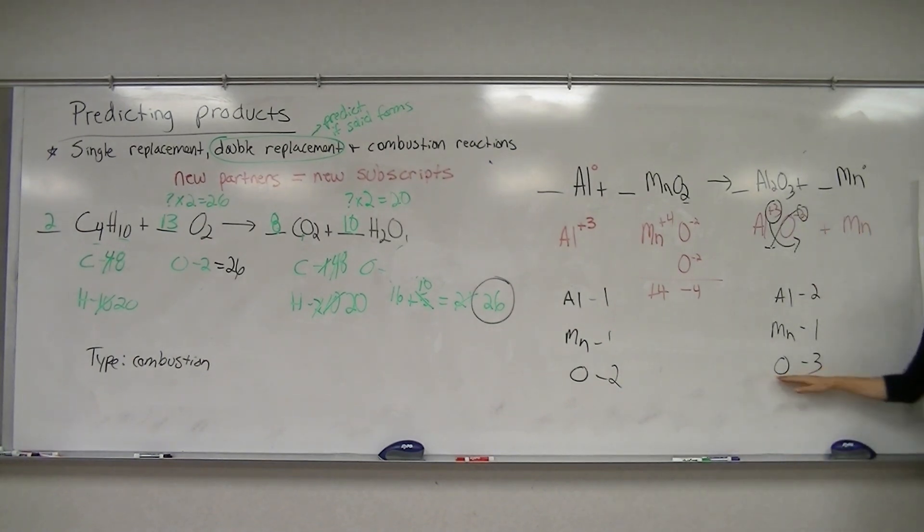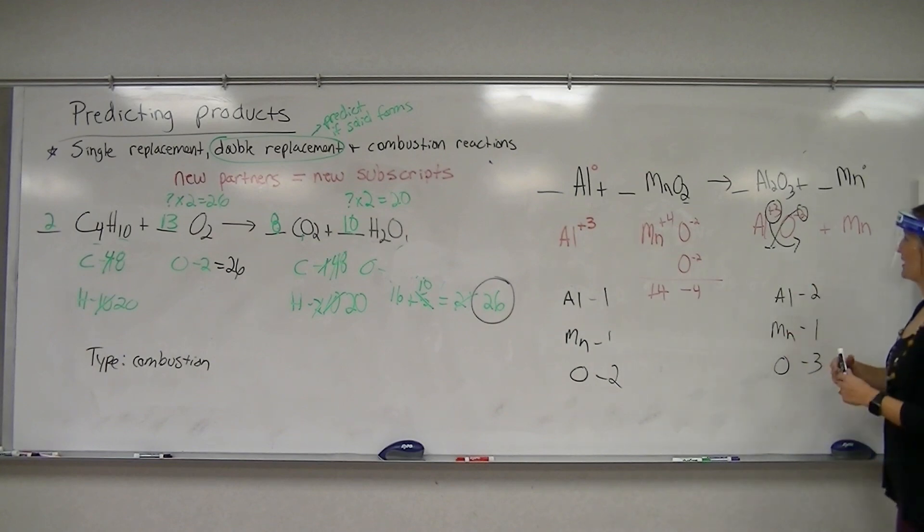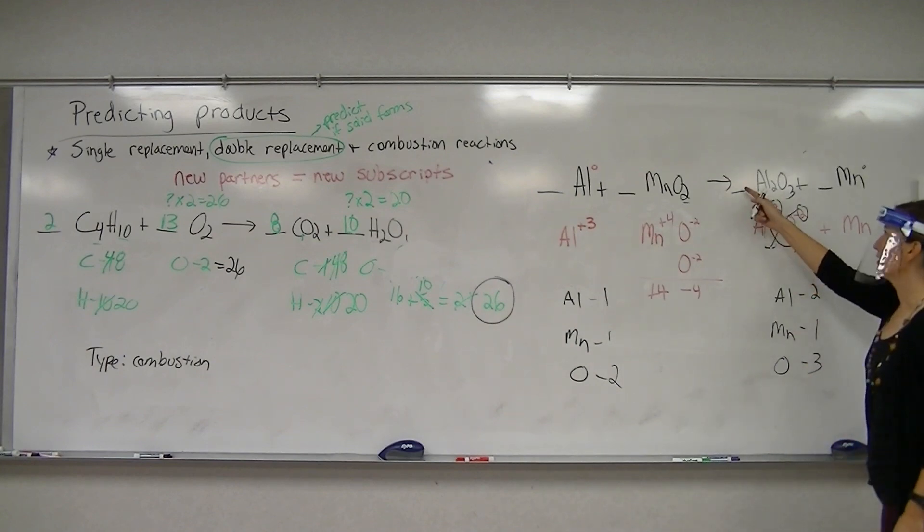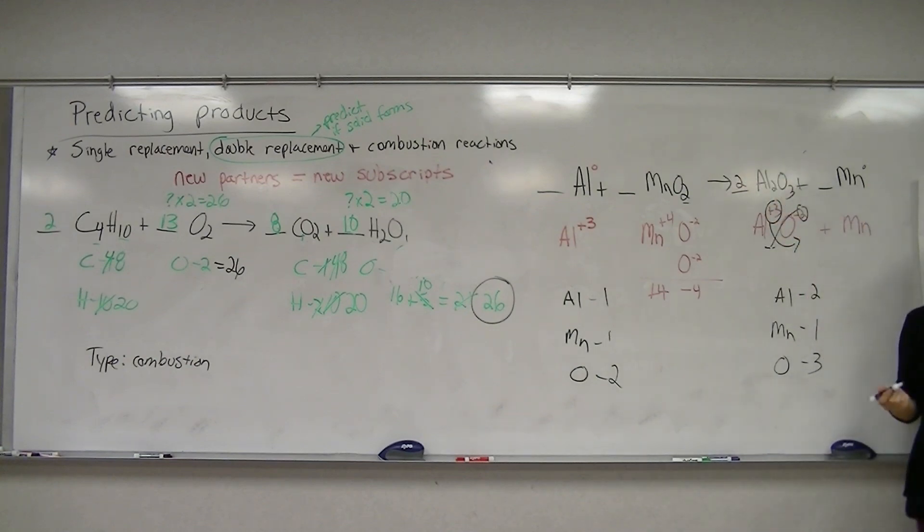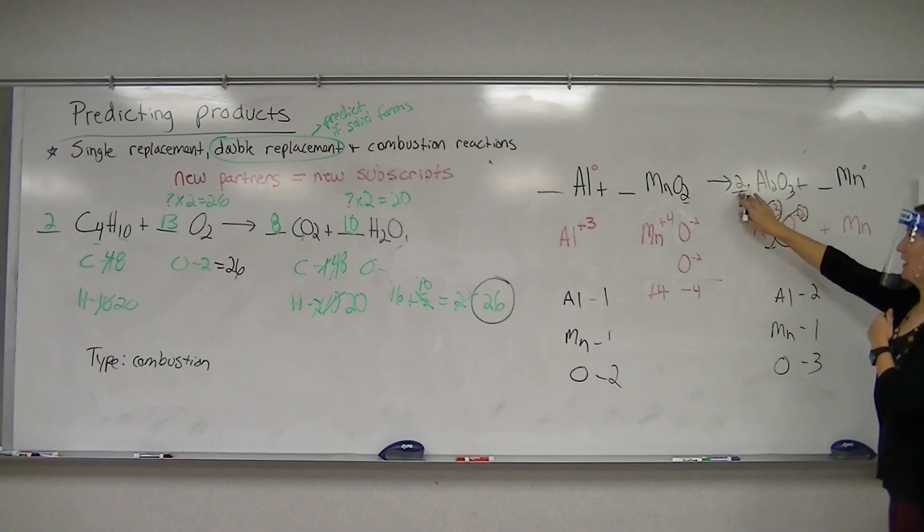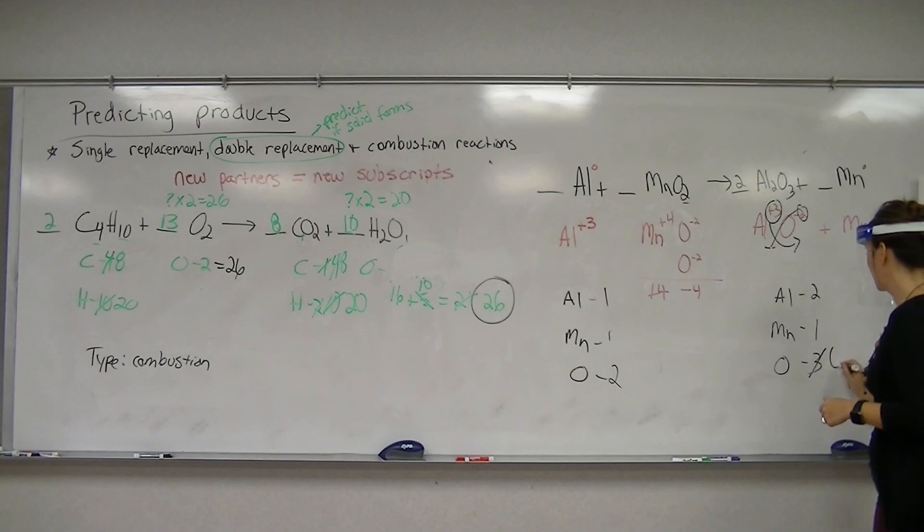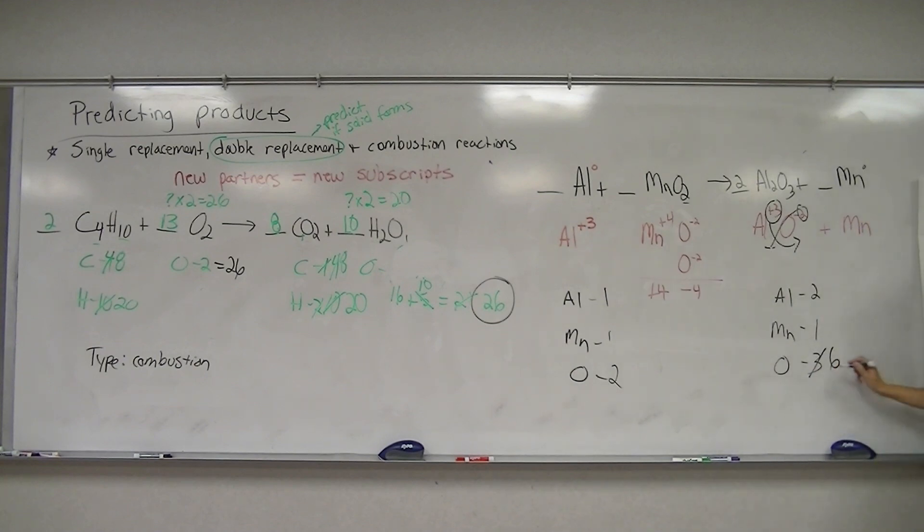So what I'm going to do is make this number even first, and then balance. So to make it even, I can put a multitude of things here, but I want to put the lowest number possible to make it even. If I have a one there, it's going to stay odd. If I have a two there, now it's two times three, gives me six. So I have an even number.